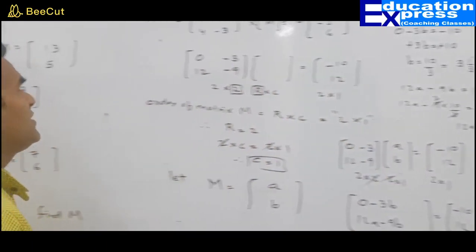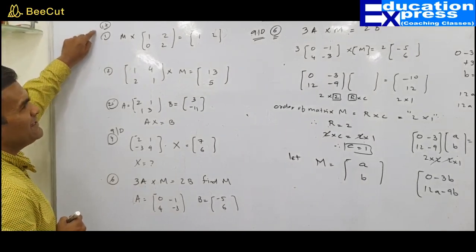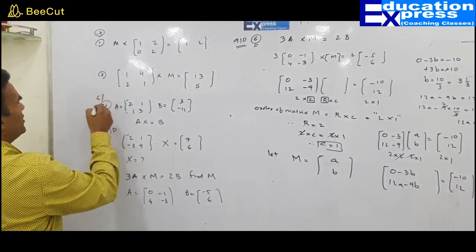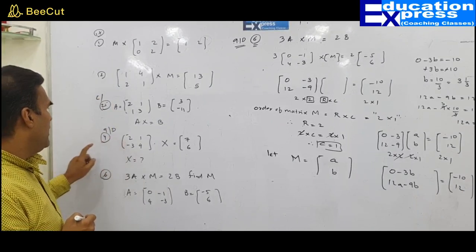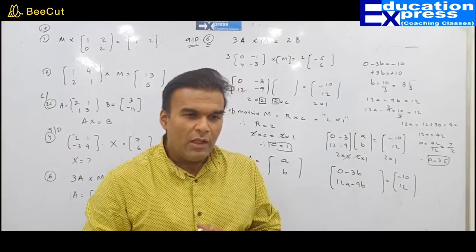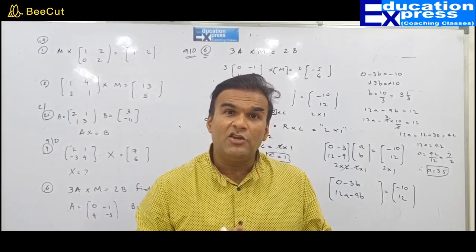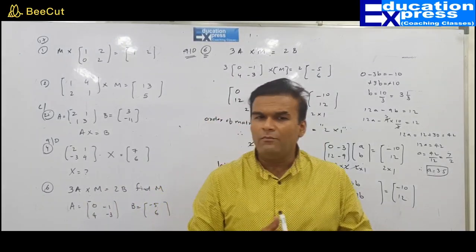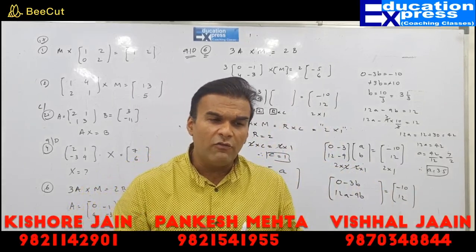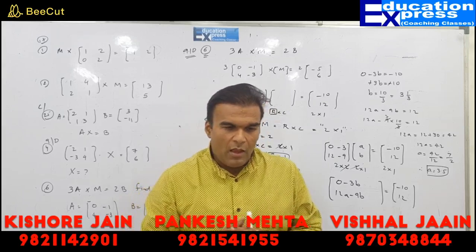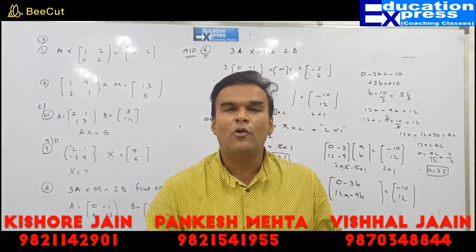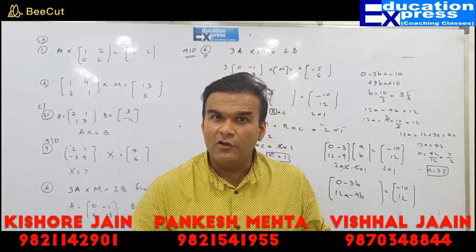Solve the questions: exercise 9C question 17 parts 1 and 2, question 25, exercise 9B question 4 and question 6. With this, your entire matrices chapter comes to an end. I am sure the chapter was easy — you can complete it in 2 hours and revision will not take much time. Focus should be only on multiplication properties; the rest is simple addition, subtraction, and basic operations. Thank you so much for watching and for your cooperation. I wish you very good luck and good health. Goodbye.